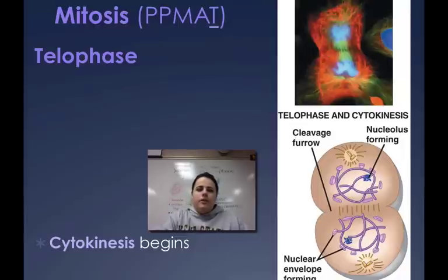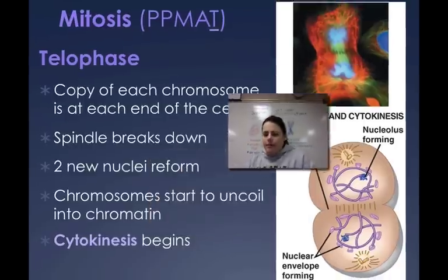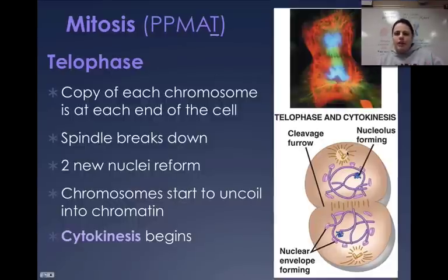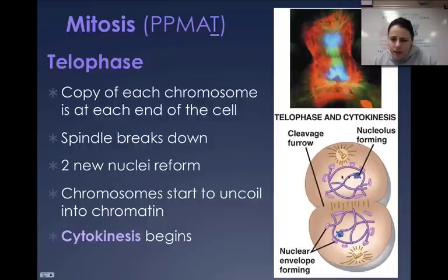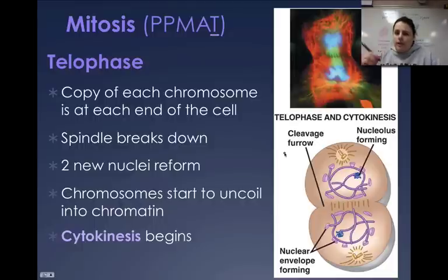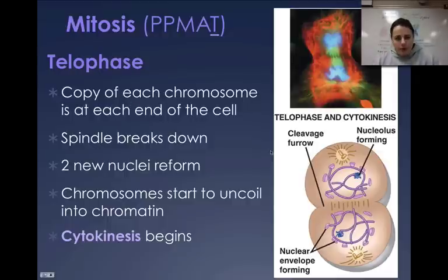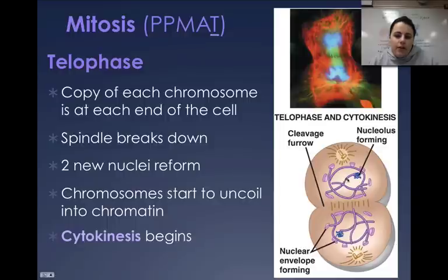The last part is telophase. A copy of each chromosome is at each end of the cell. The cell gets really long and oblong. Spindle fibers break down — there are no more spindle fibers in the picture. We need to re-protect the DNA, so a new nuclear envelope forms around where the DNA is. The chromosomes start to uncoil back into chromatin, becoming less condensed and stringy, eventually forming a full nucleus with all the chromatin inside.